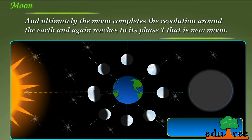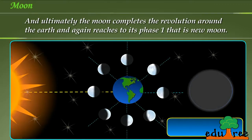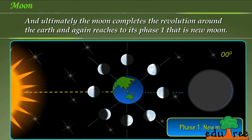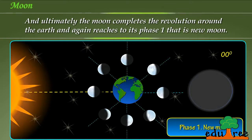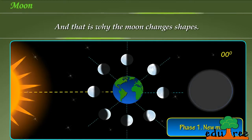And ultimately the moon completes the revolution around the earth and again reaches to its phase 1, that is new moon. And that is why the moon changes shapes.